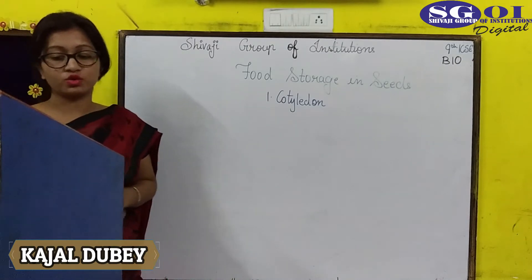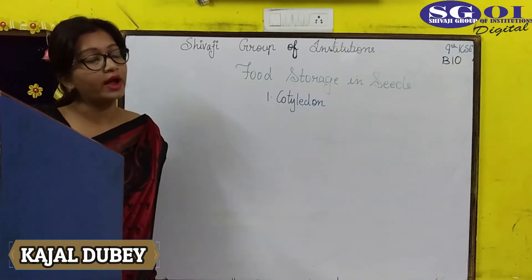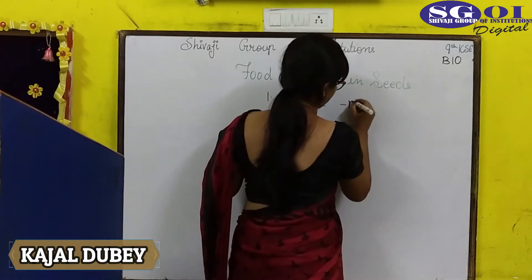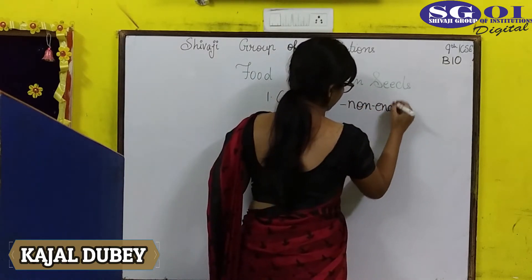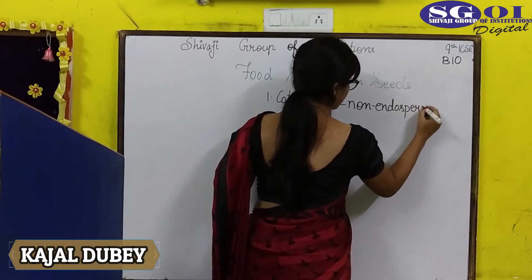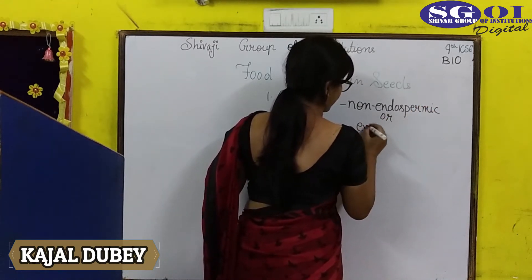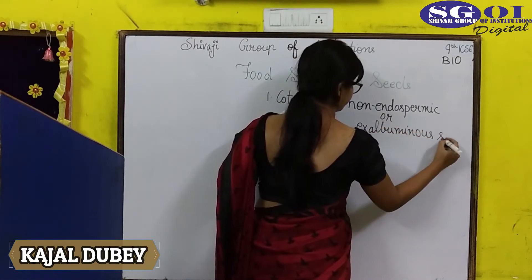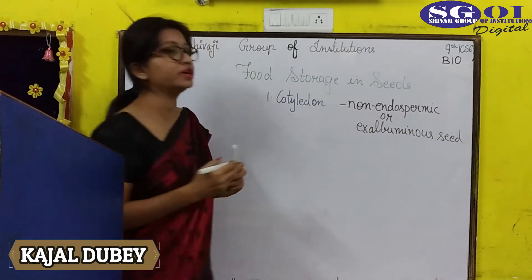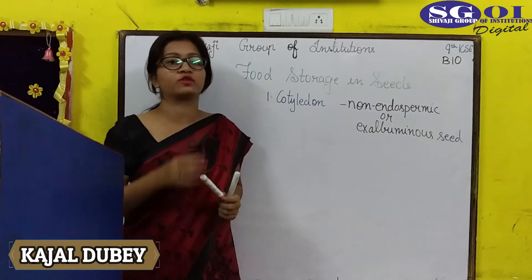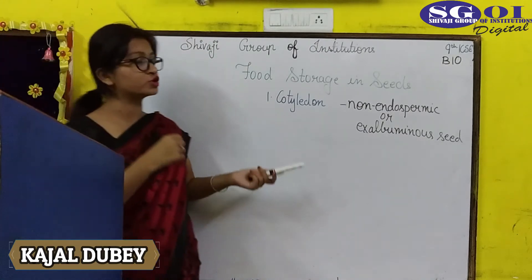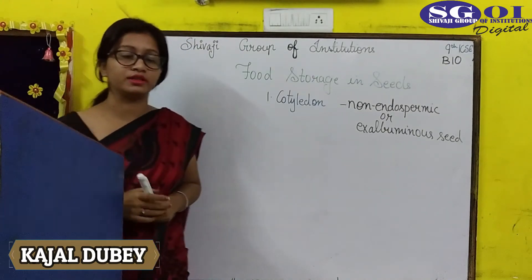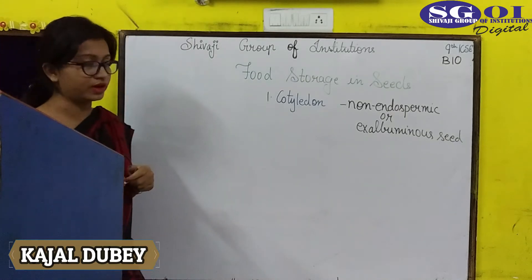In seeds where food is stored in the cotyledon, there is no endosperm present. Such seeds are known as non-endospermic or ex-albuminous seeds. So, in those seeds in which food is stored in the cotyledon part, they are called non-endospermic or ex-albuminous seeds because the endosperm is completely absent — as in the case of gram, pea, etc.